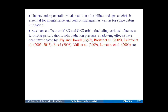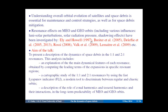Here are listed some of the papers dealing with this subject. The aim of the talk is to present a description of the dynamics of space debris in one-to-one and two-to-one resonances. This analysis includes an explanation of the main dynamical features of each resonance, a cartographic study using the FMFT indicator, and a description of the role of zonal harmonics, tesseral harmonics, and their interaction in the long-term predictability of LEO and GEO orbits.